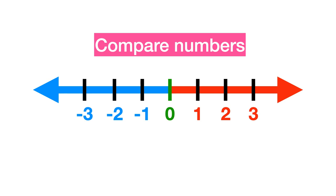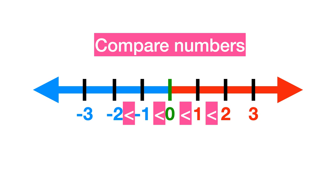For example, 0 is bigger than minus 1, and minus 1 is bigger than minus 2, and so on. 1 is bigger than 0, and 2 is bigger than 1, and so on.